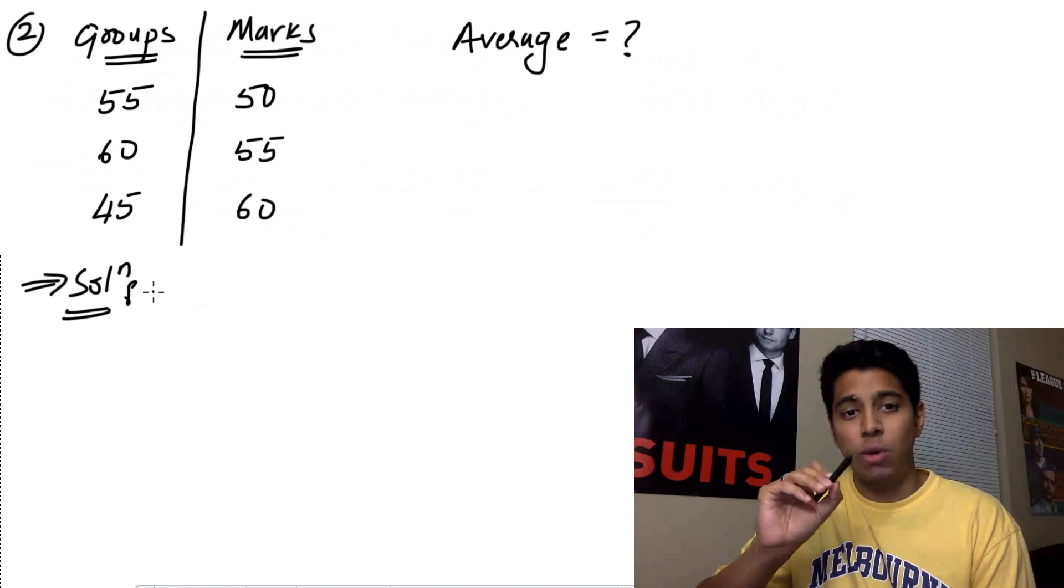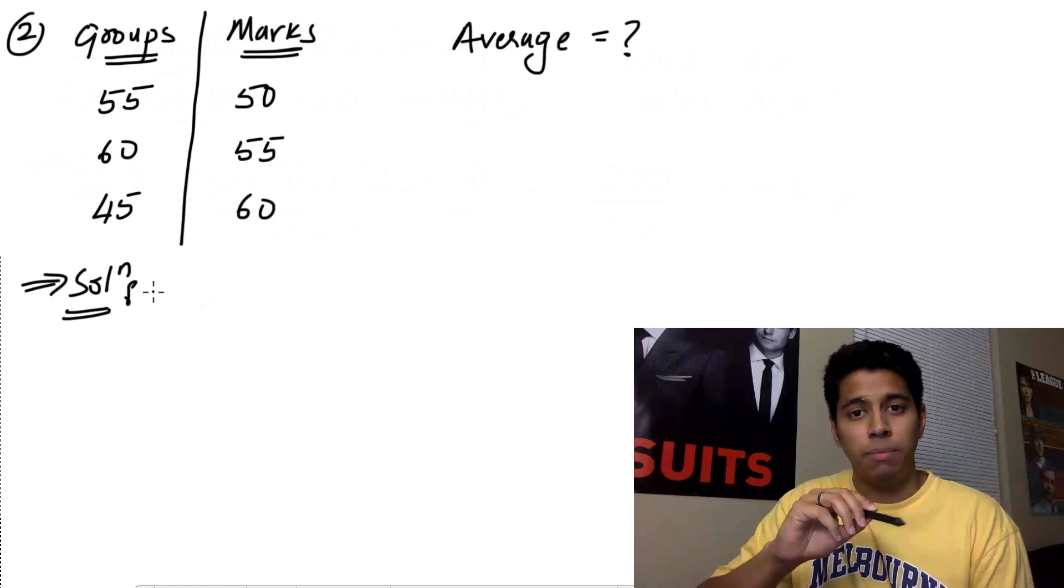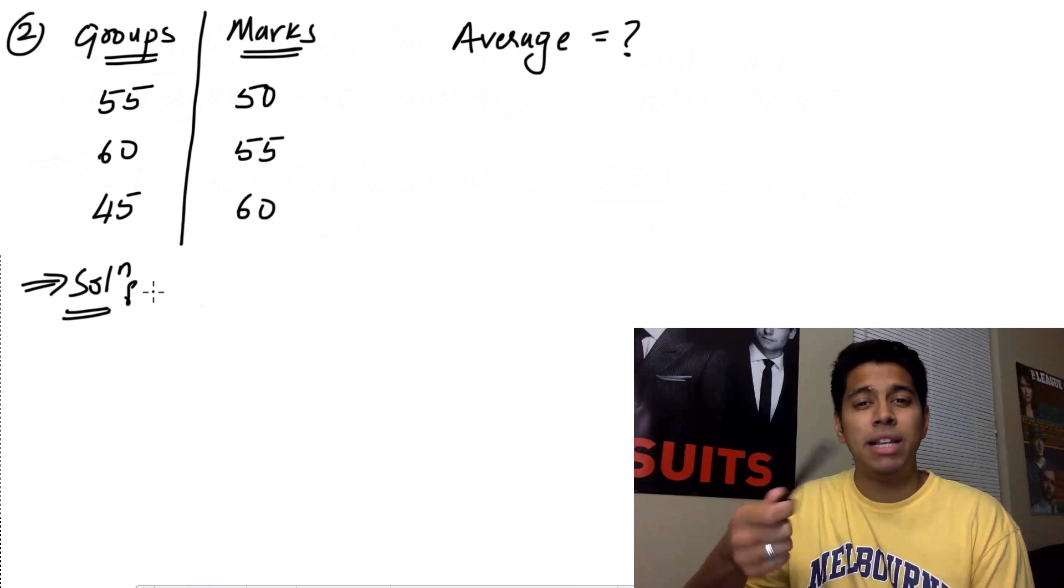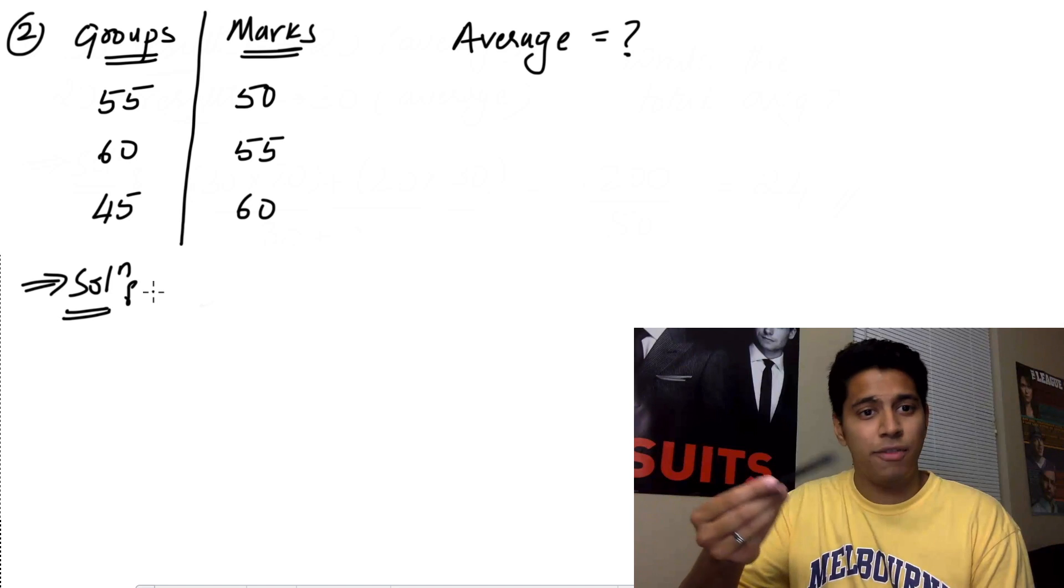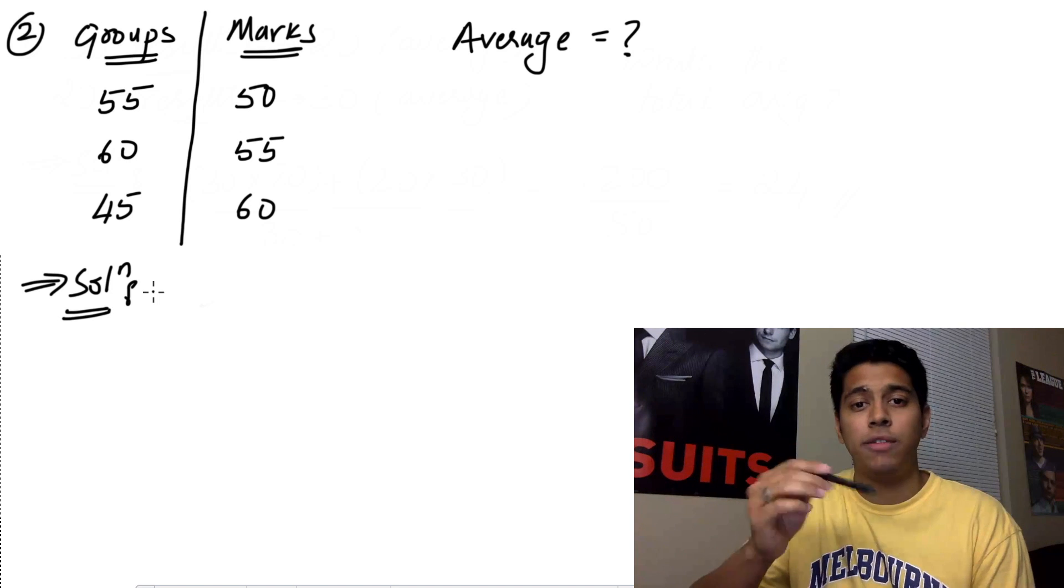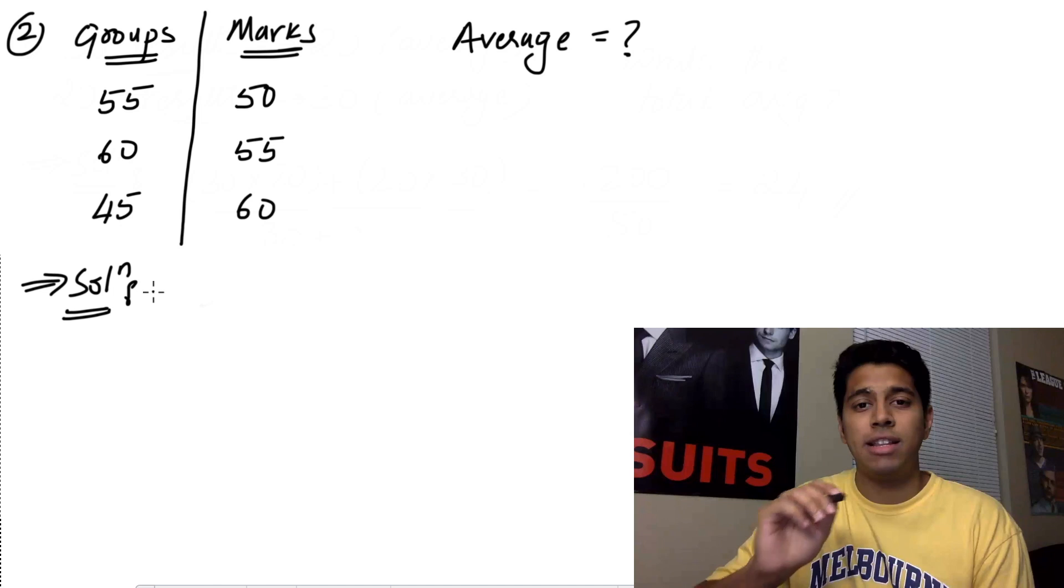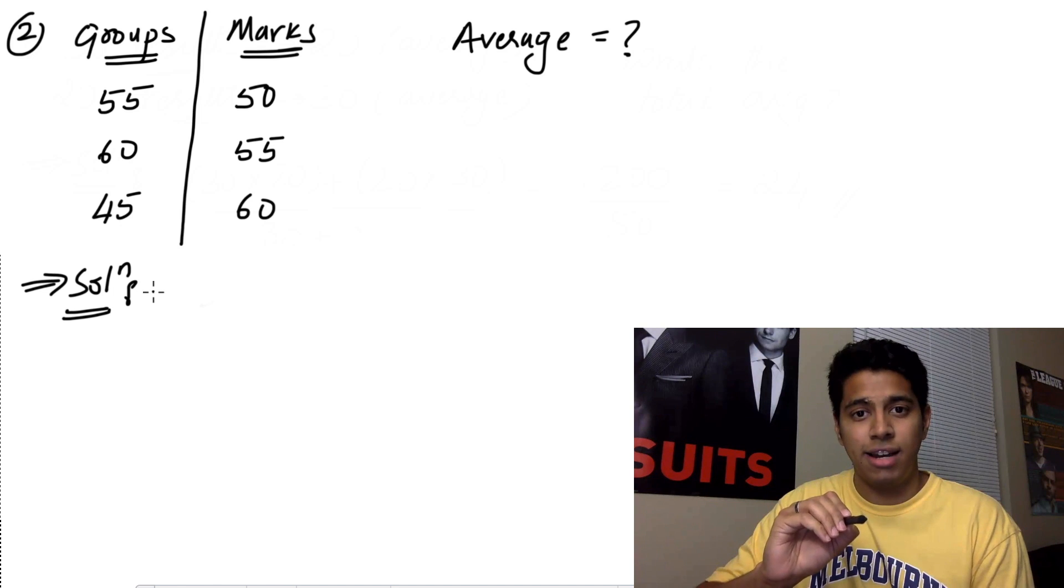The thing what they're trying to trick you here is that look at the numbers in the groups column and the marks column. You have 55, 60 and 45 in the groups and you've got 50, 55 and 60 in the marks. So you see there are similar numbers. And if you don't really know what goes in the denominator, you're going to make a mistake. If you put the marks in the denominator instead of the groups, you're going to get a different answer. And there's definitely going to be an answer in the options that has that answer in, which is incorrect.